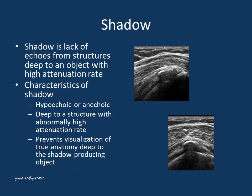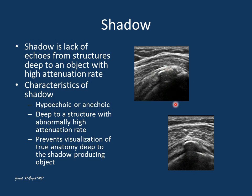Let's look into the shadow. Shadow is lack of echoes from structures deep to an object with high attenuation rate. Here we see a calcification in the tendon with a high attenuation rate. The characteristics of a shadow: it is hypoechoic or anechoic and deep to the structures with abnormally high attenuation rate. The structure with an abnormally high attenuation rate prevents the visualization of anatomy deep to it, so you are unable to see structures which are deep to the structure that produced the shadow.